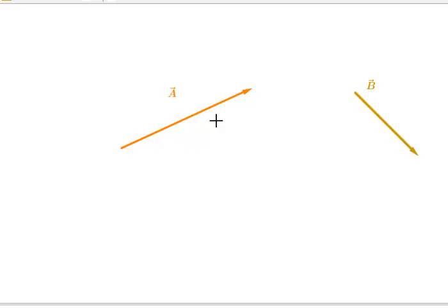Here we see two vectors. To add them, we simply attach the tip of one vector to the tail of the other. The resultant vector runs from the tail of the first to the tip of the second.